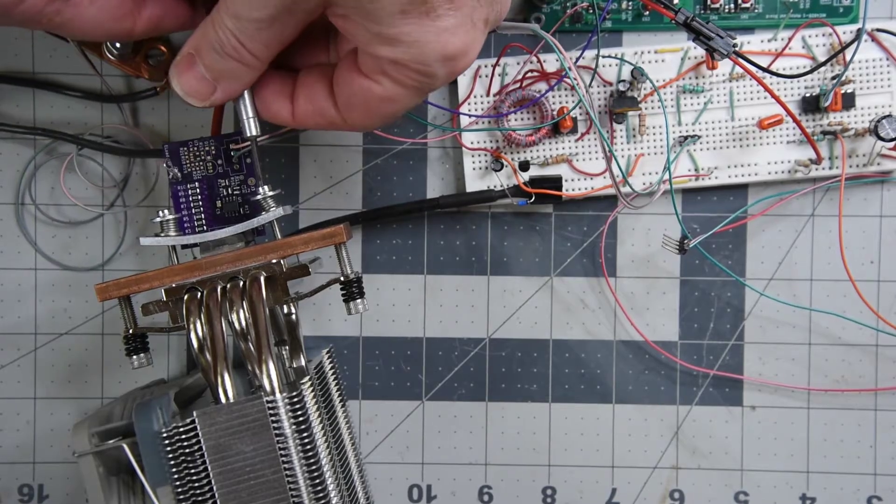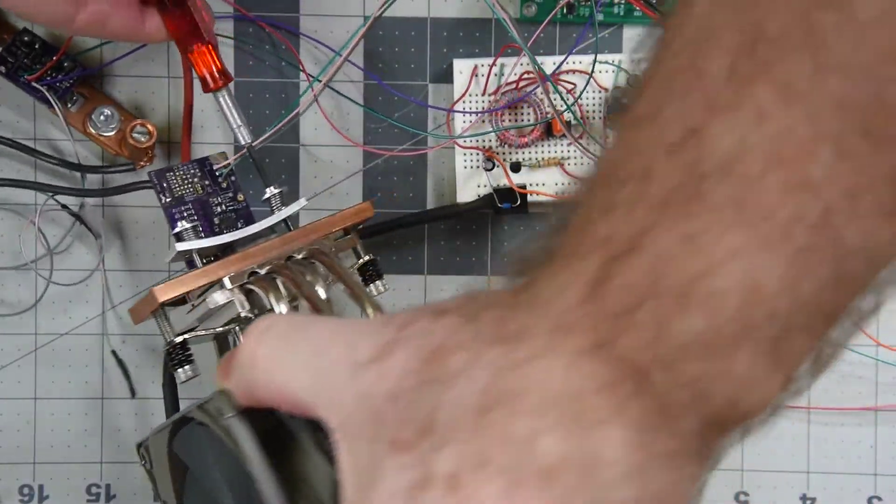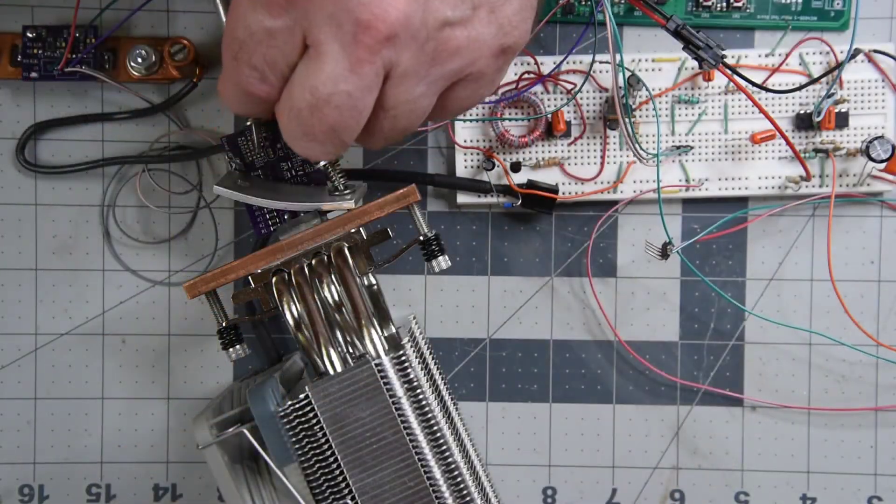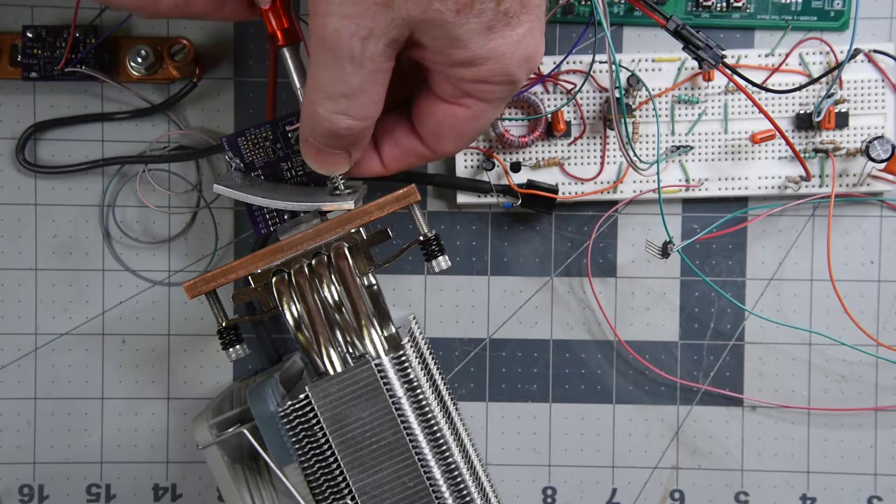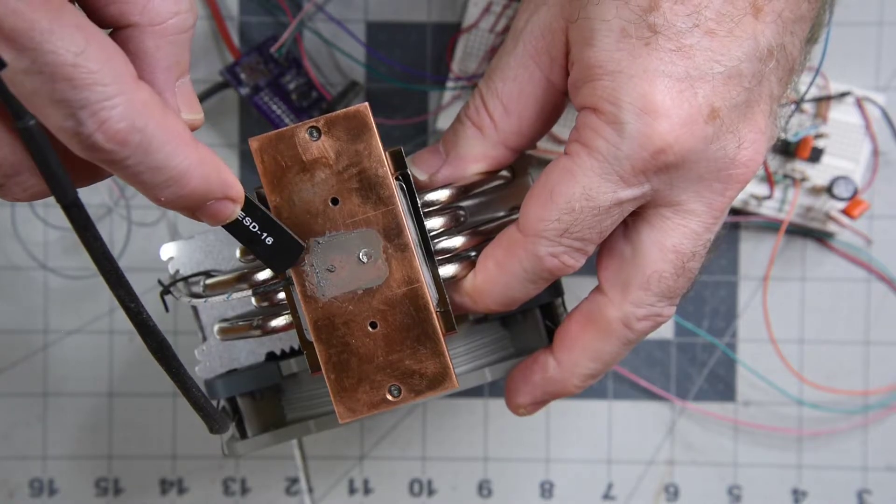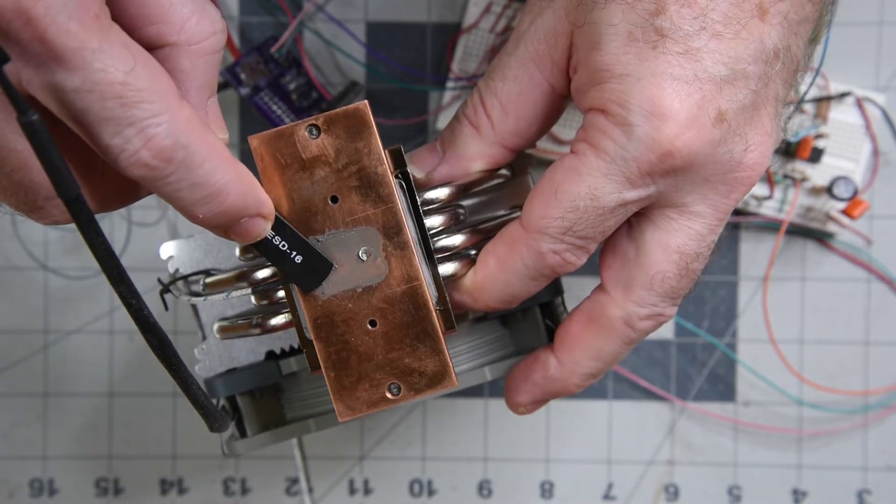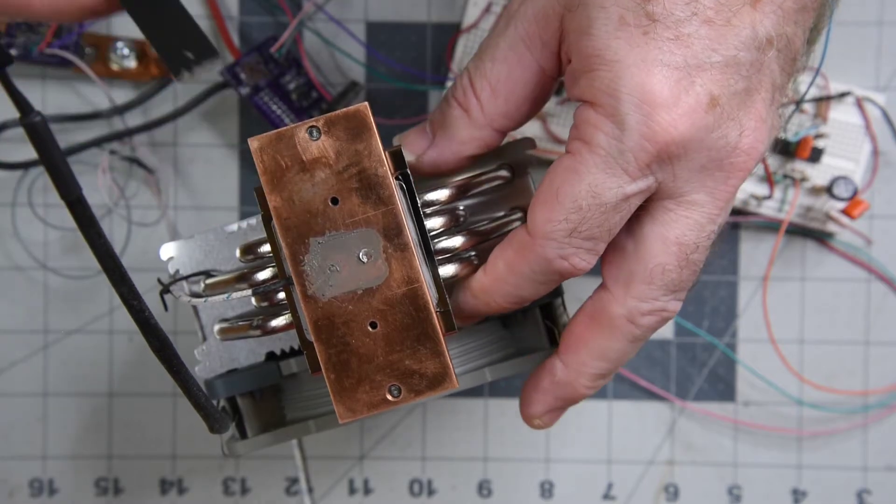Now I want to double check and make sure the thermocouple still has some spring to it. Yep, still sticking up a bit with some spring to it, so I think I have some good temperature readings now.